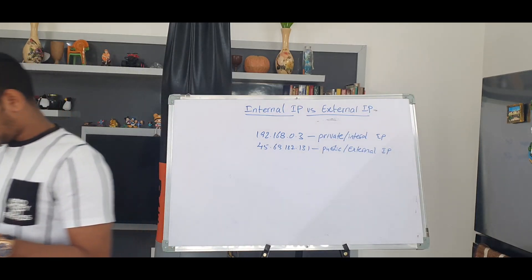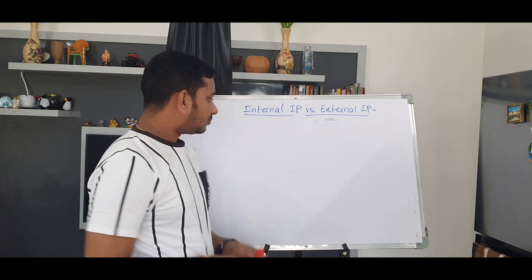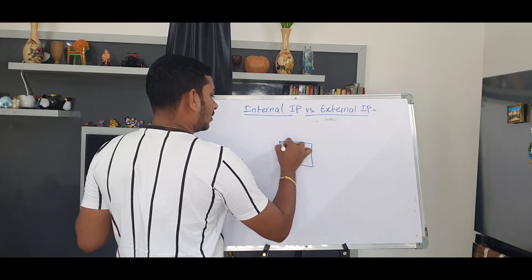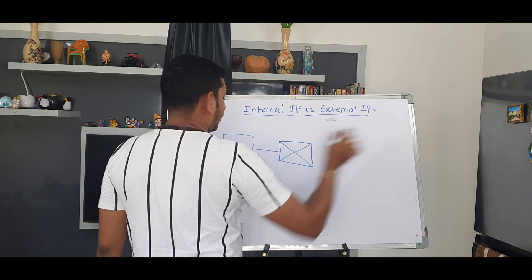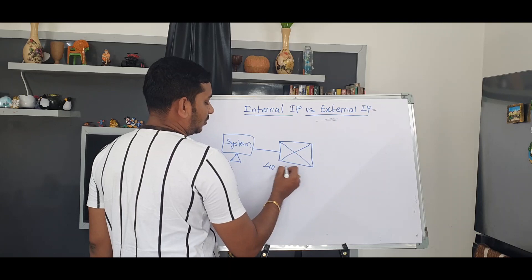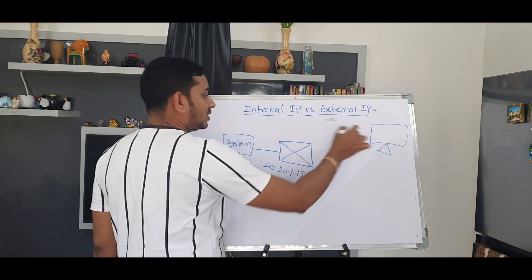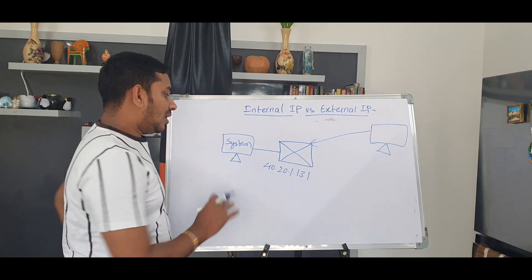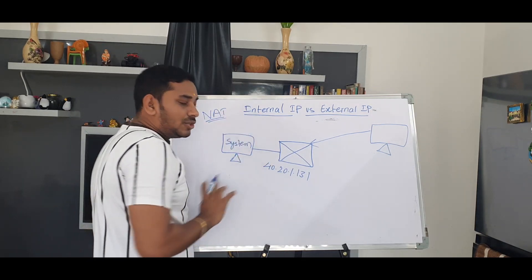Now we will discuss the topic of internal IP. This is the modem. You need to connect one system. This is the outside internet and this is the internal system. You need to open an IP address for any other system. After the internet usage, you need to connect using network address translation — this is a networking concept.